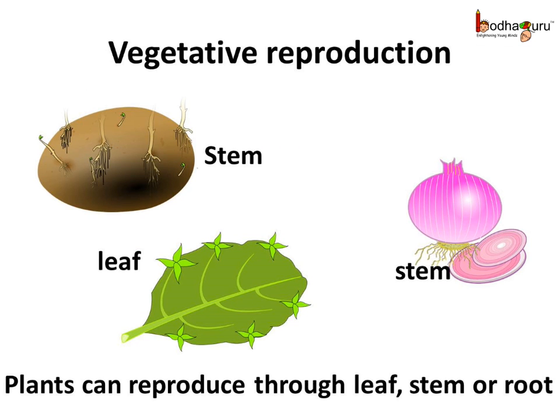In some plants, the vegetative parts such as the root, stem, leaf, etc. can be used to reproduce new plants. This is called vegetative reproduction. Since it does not involve the male or the female gametes, it is also a type of asexual reproduction.